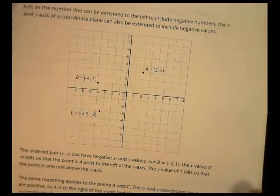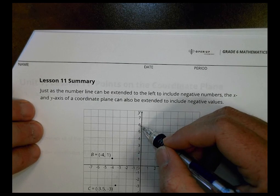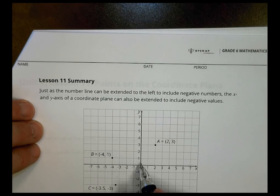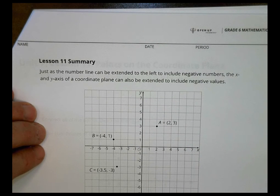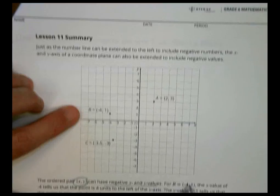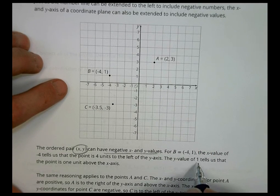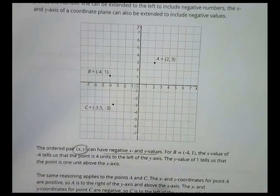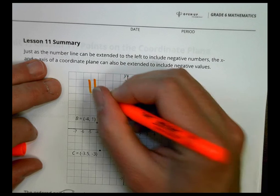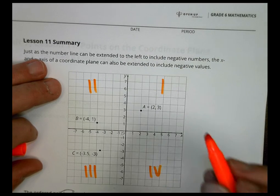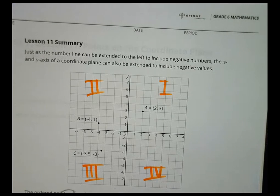It says just as the number line can be extended to the left to include negative numbers, the x and y axis of the coordinate plane can also be extended to include negative values. So our y can go down as well. We can have negative y values and, of course, negative x values. The ordered pair x, y can have negative x and y values. For B, for example, negative 4, 1. The x value of negative 4 tells us the point is 4 units to the left of the y axis. The y value of 1 tells us it's 1 unit above the x axis. You can see how that works. Again, looking at today, we have the quadrants 1, 2, 3, and 4. You can leave them like that or you could write them like Roman numerals. Take a moment to work on your homework.